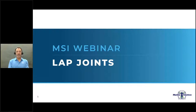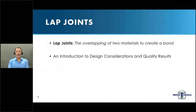Hi everyone and welcome to the Machine Solutions Tube Bonding webinar series. My name is Brian Beam and in this segment I'll be reviewing lap joints or overlap joints and everything you need to know to make great joints. A lap joint is where one material overlaps the other material for a certain length. The materials are then heated and an adherence is created between the materials. This is typical of balloons but it can also be a shaft to another shaft.